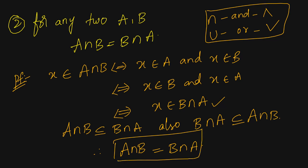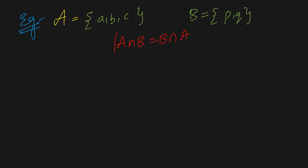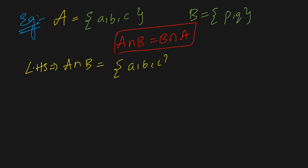Therefore, we can conclude that A intersection B equals B intersection A. This is the proof of the second commutative law. For better understanding, let us do one example. Consider set A as {a, b, c} and set B as {p, q}. We need to prove that A intersection B is the same as B intersection A.